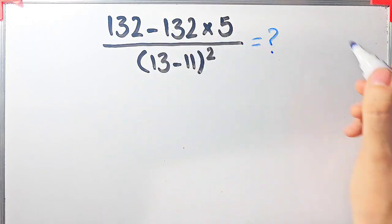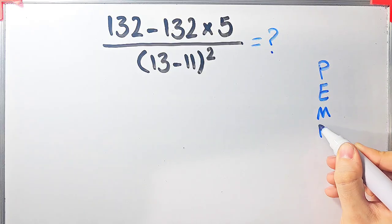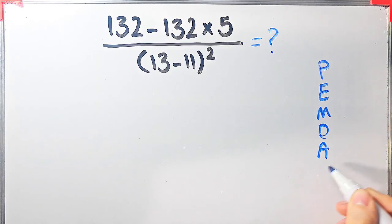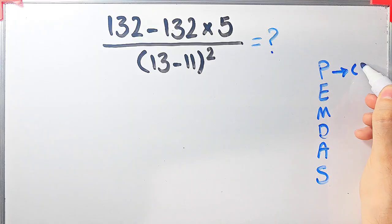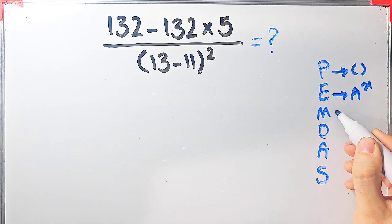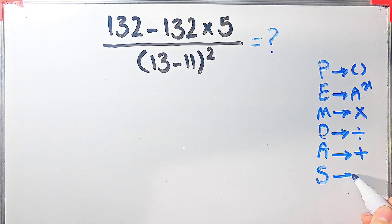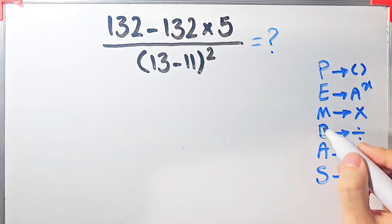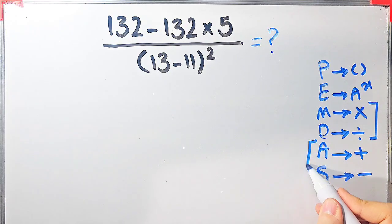To solve this question we need to follow the PEMDAS rule. PEMDAS shows the priority of the mathematical operations, and if you don't pay attention to this rule you get the wrong answer. In this rule: P stands for parentheses, E stands for exponent, M stands for multiplication, D stands for division, A stands for addition, and S stands for subtraction. Multiplication and division have the same level of priority, and addition and subtraction have the same level of priority.